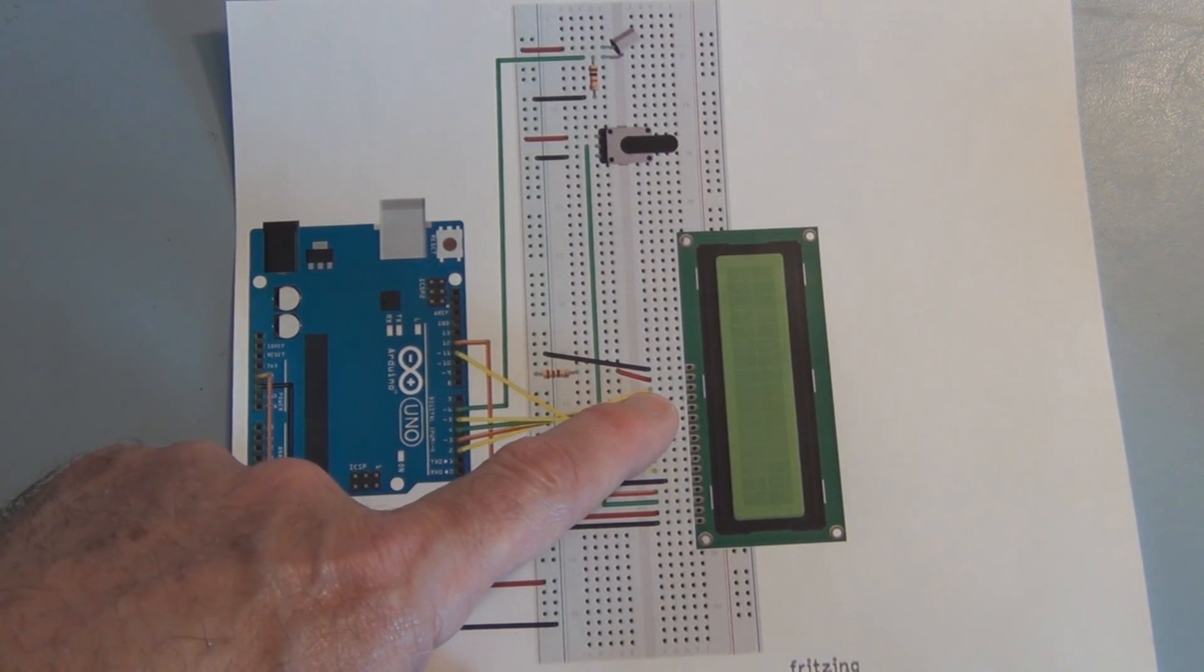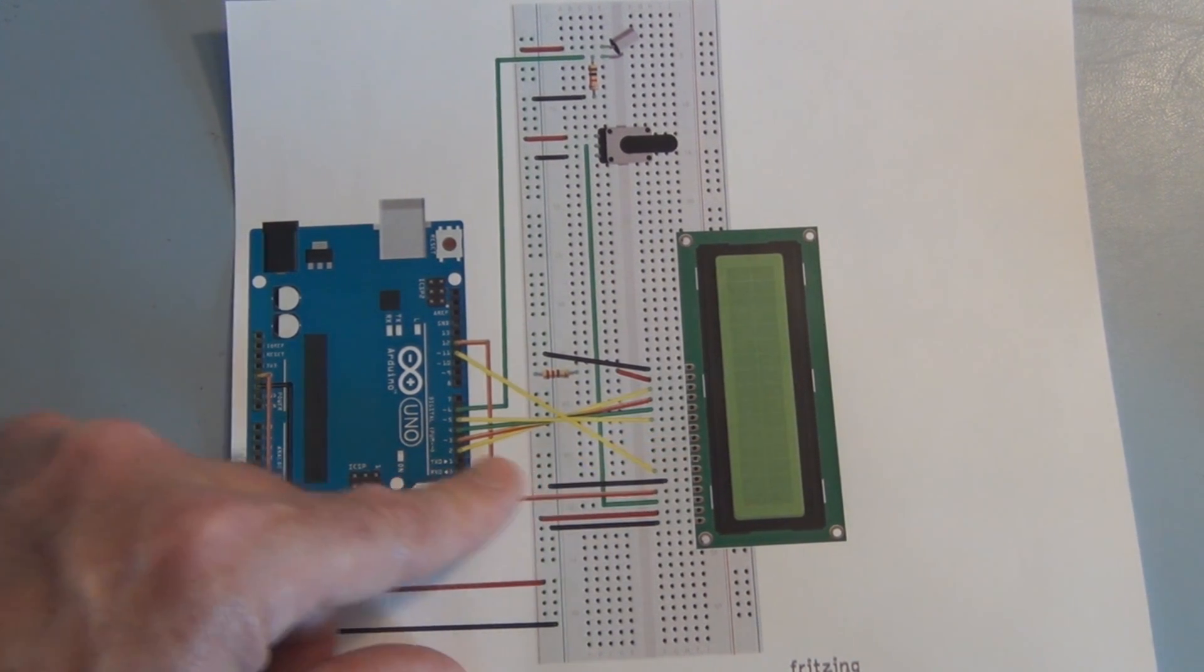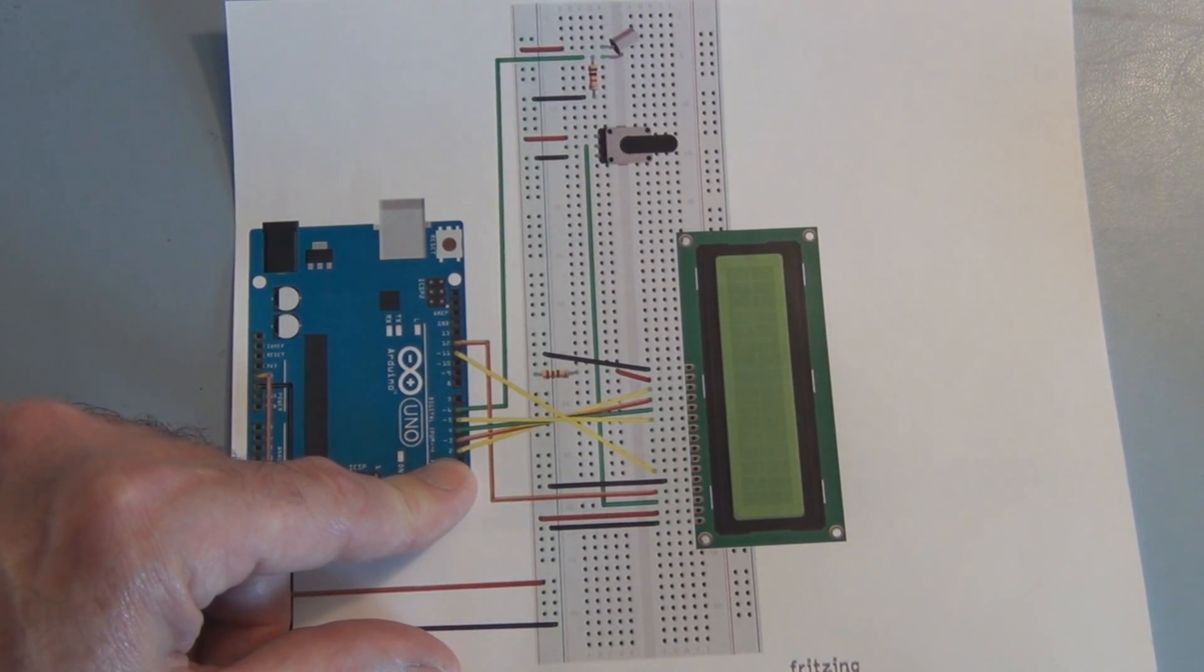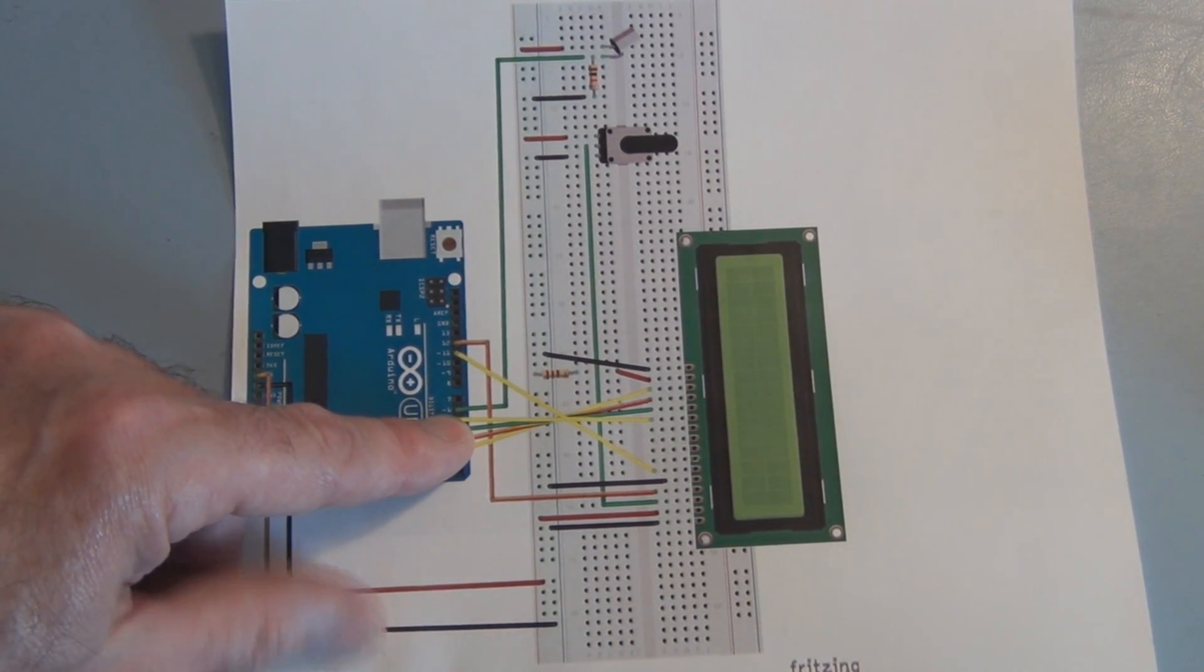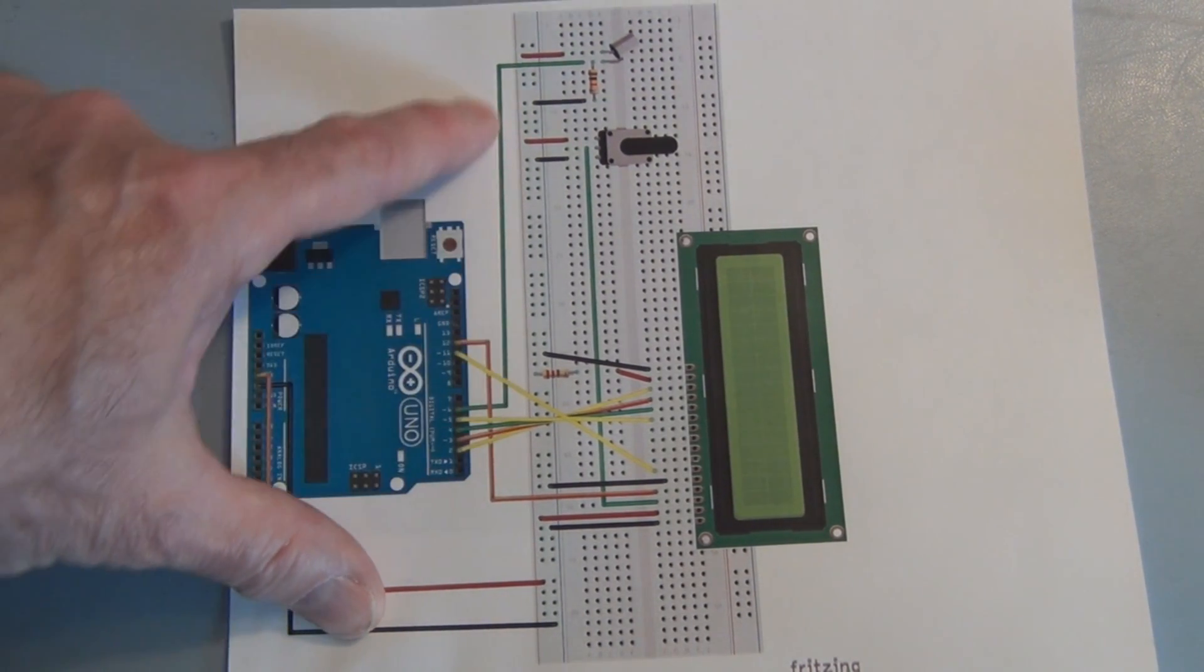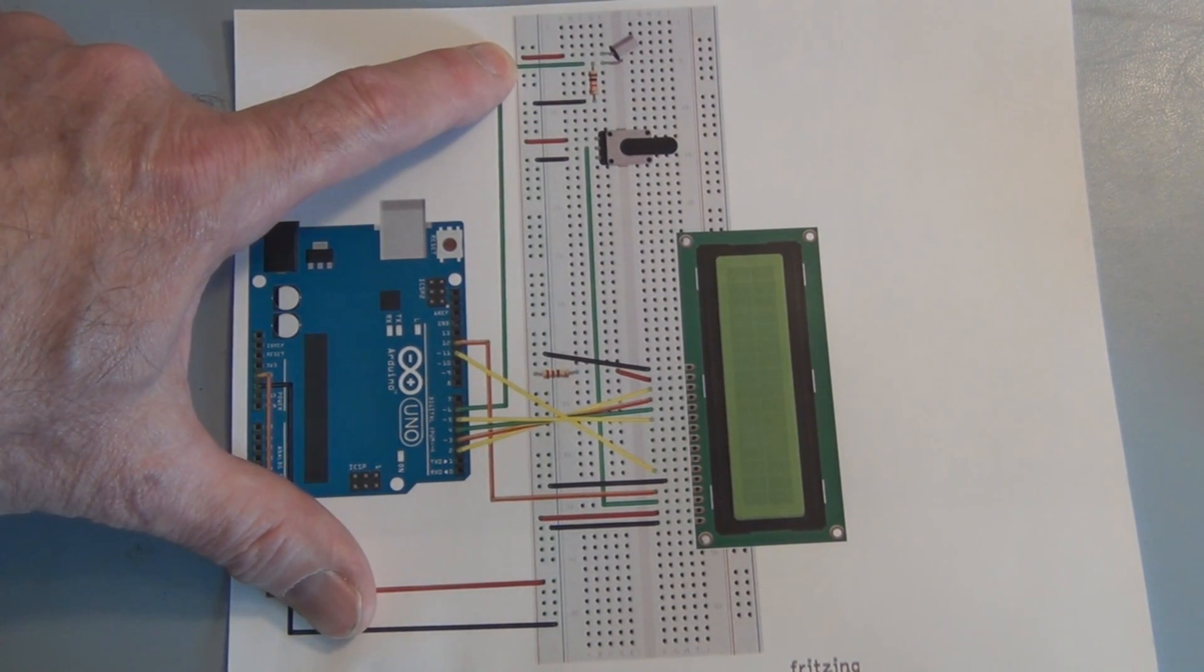We've got pin 14, 13, 12, and 11 hooked up to the Arduino's pin 2 through 5. And pin 6 is going to be an input and we have that hooked up to the tilt switch. And the other side of the tilt switch goes to plus 5 volts.